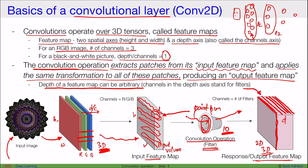The channels in the depth axis of your output feature map represent the number of filters you applied to obtain that output feature map.